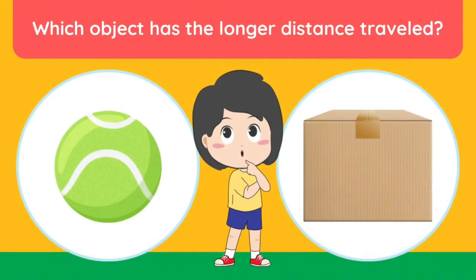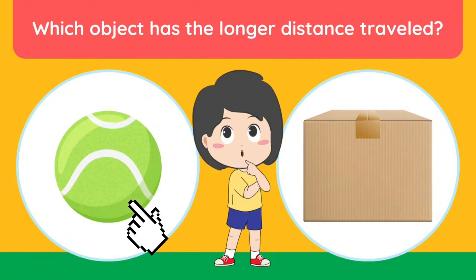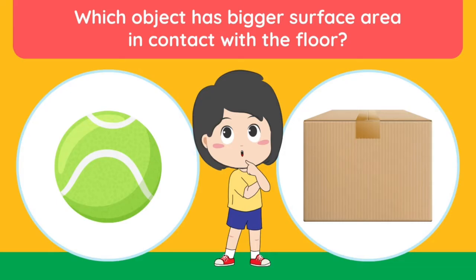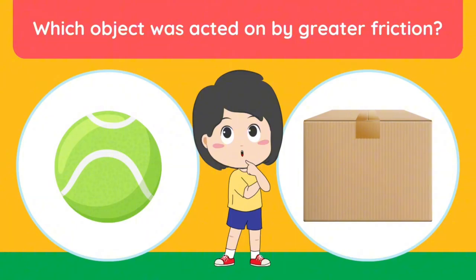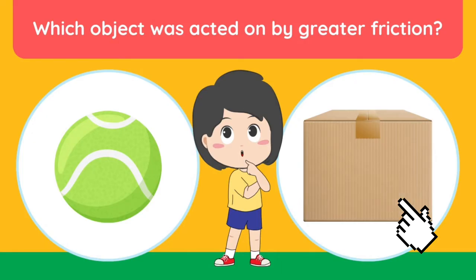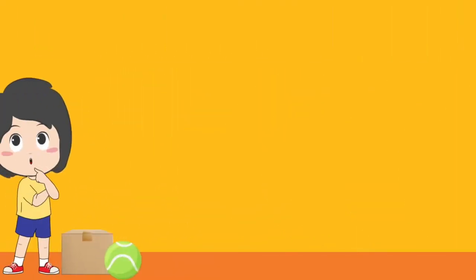Answer the following questions by choosing between the ball and the box. Which object has the longer distance traveled? Which object has a bigger surface area in contact with the floor? Which object was acted on by greater friction? Based on the activity, complete the following statements by choosing the word that best completes each sentence.